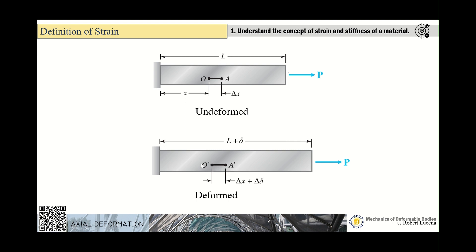We now have O prime and A prime as the new locations of points O and A due to deformation caused by force P. The original distance between O and A is δX. The distance between O prime and A prime equals δX plus the amount of deformation caused — this deformation applies only to segment OA.